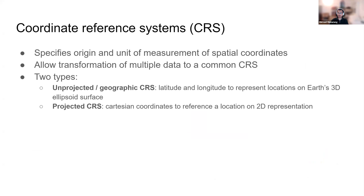What I learned most in this chapter is about coordinate reference systems — this is very important to understand. Coordinate reference systems specify the origin and unit of measurement of spatial coordinates. There are many coordinate reference systems all around the world, and having them defined together allows transformation of multiple datasets to a common coordinate reference system. It seems possible to seamlessly convert from one system to another.